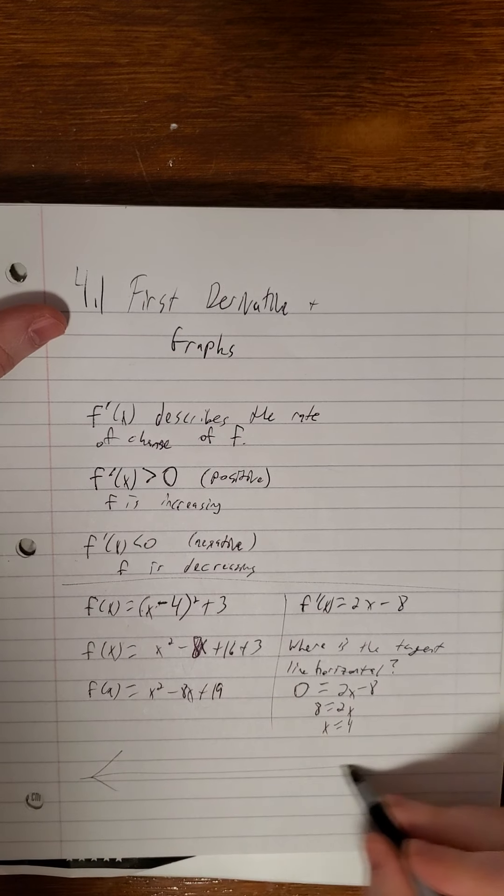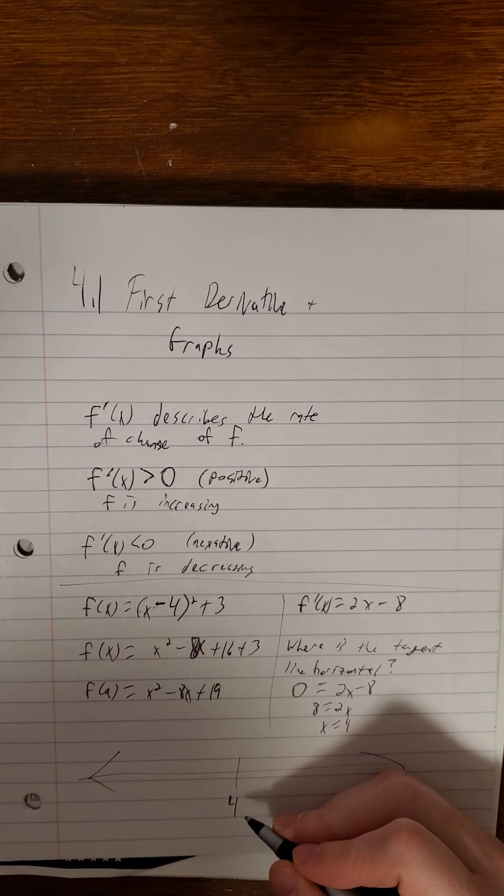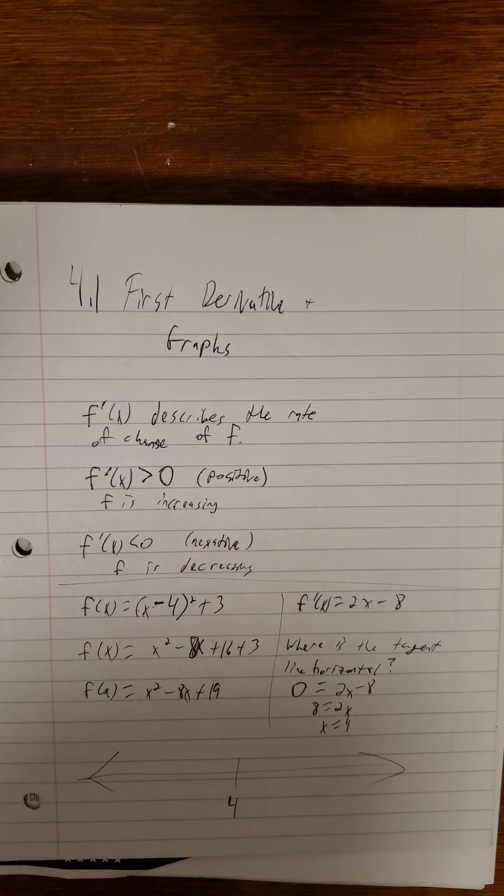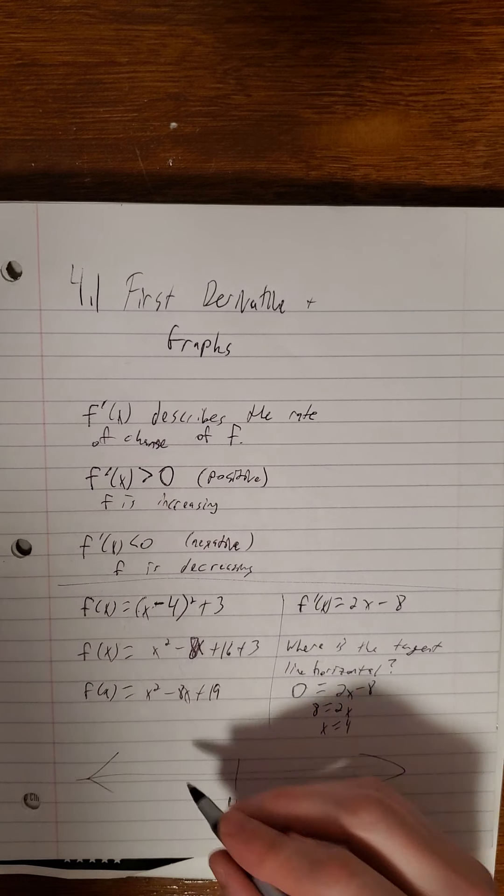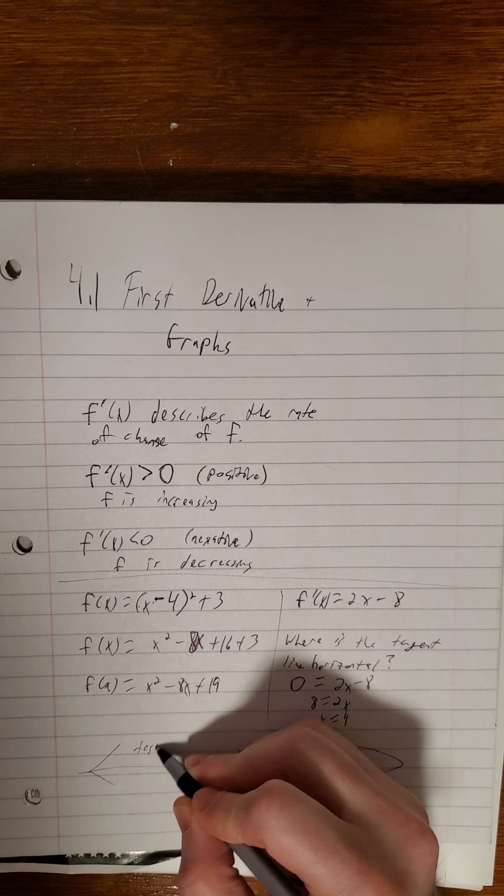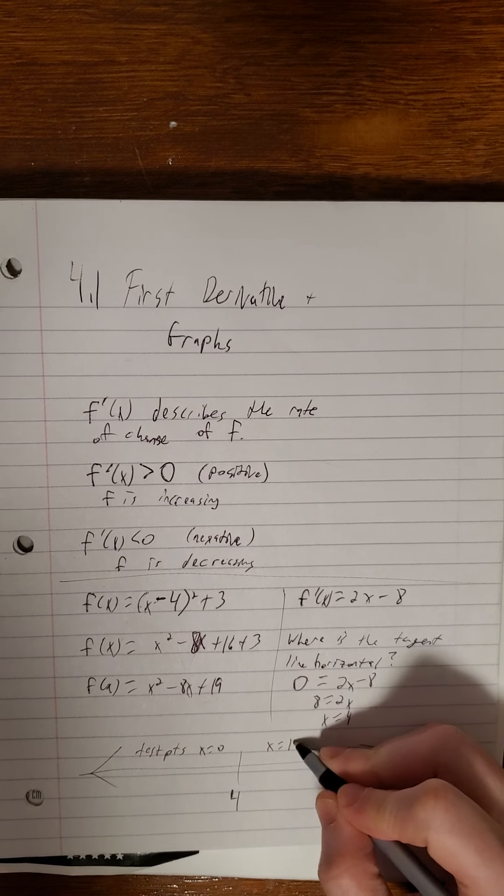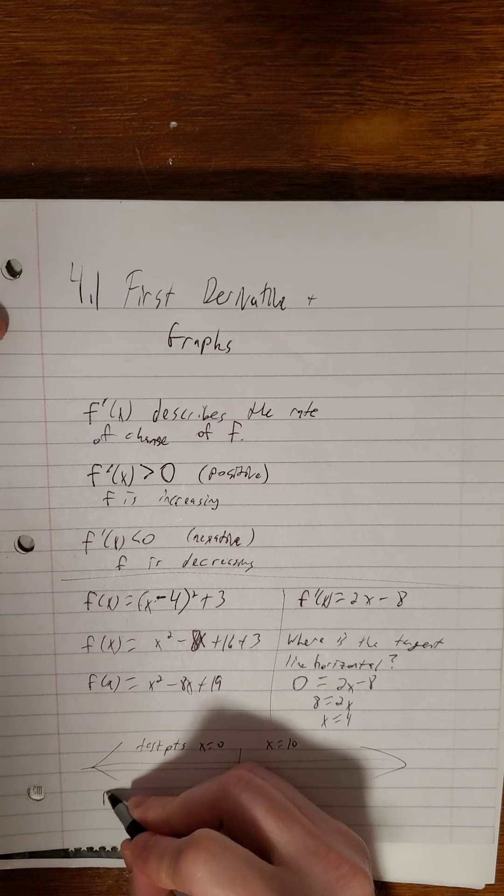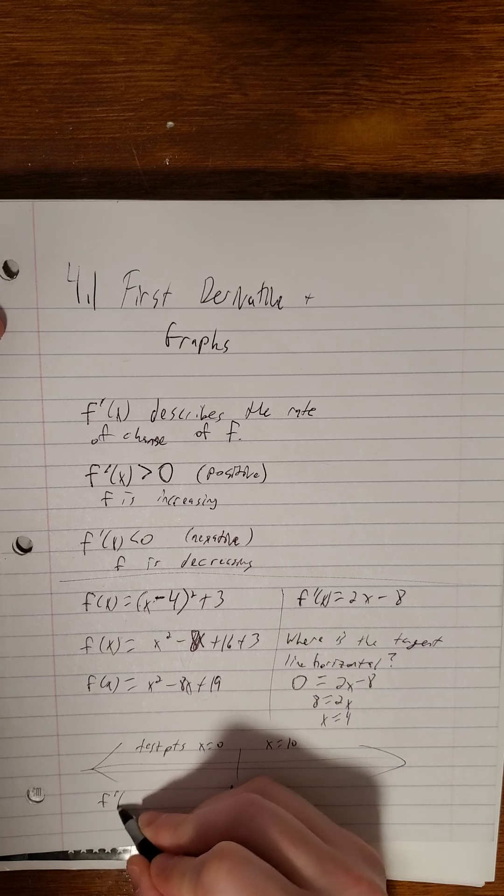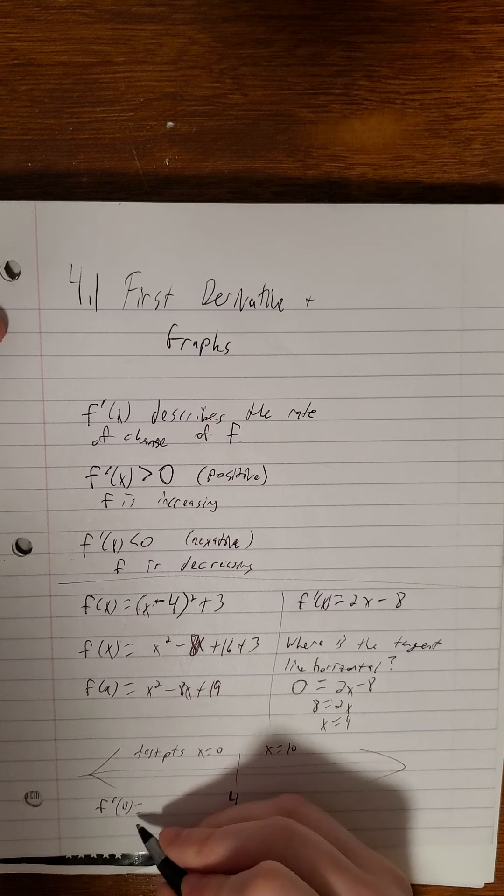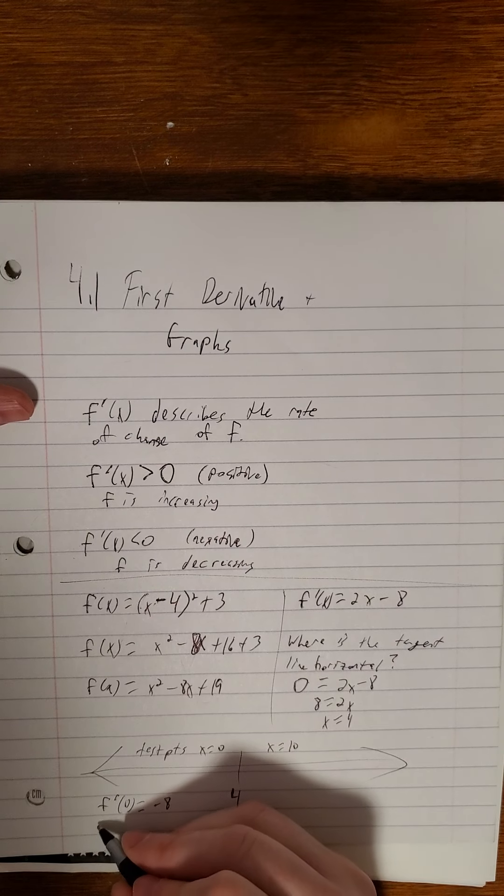So that sort of cuts our number line into sort of two pieces, things that are to the left of 4, things that are to the right of 4. Now what we can do is just kind of use a guinea pig on either side, figure out what we call a test point. So I'll try out x equals 0 and x equals 10. And I'm looking for what the slope is at that point. So f prime of 0 would be negative 8. That is negative, so the function is decreasing on that interval.